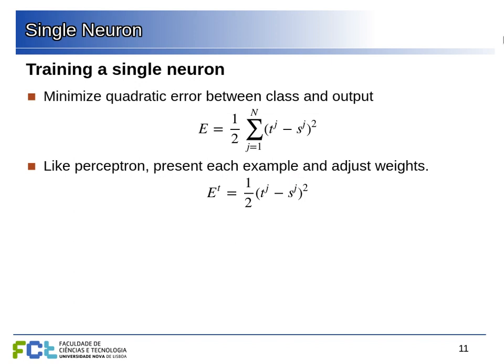As the target function we are going to minimize the quadratic error between what the class should be — zero or one — and what the output of our neuron is, f_j. The target value is t_j. So we feed in many examples and try to minimize this quadratic error function.